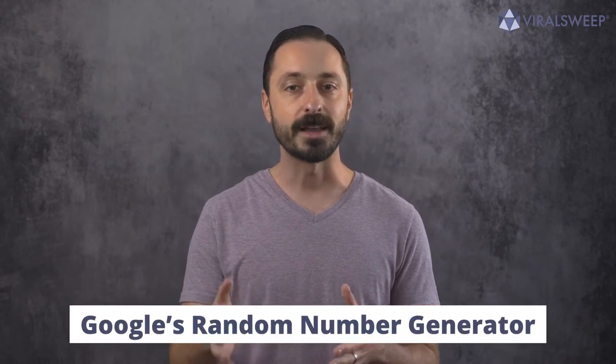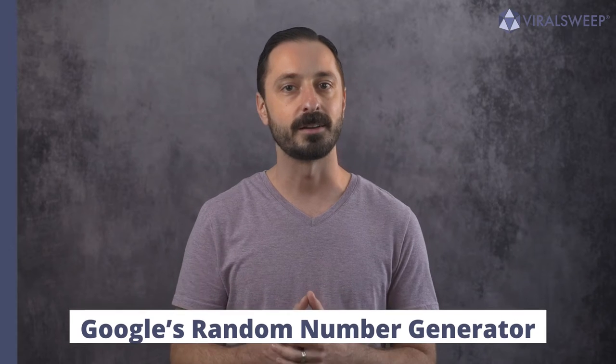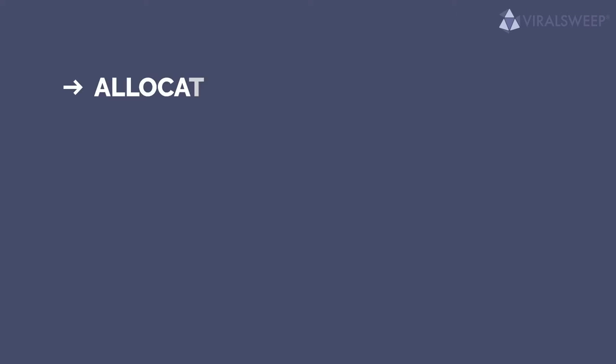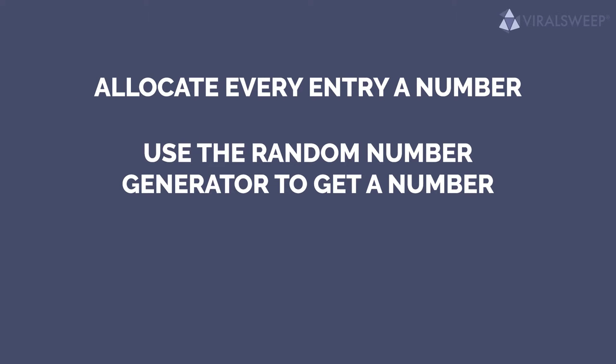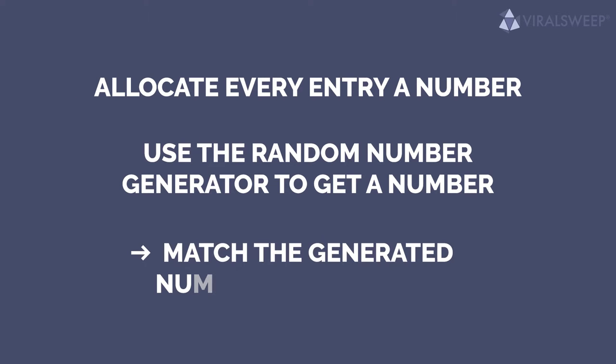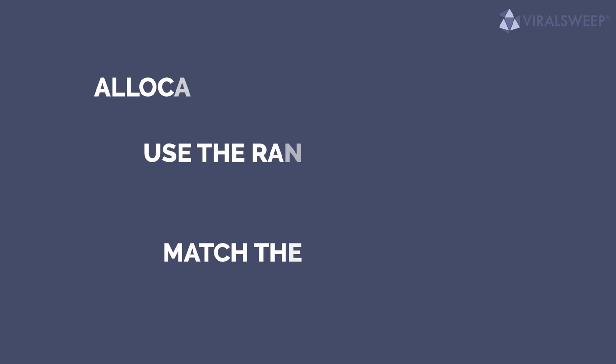Because it's not a lot of data to process, you can pick your winner using a random number generator like random.org or Google's random number generator. When using these types of free online tools, all you have to do is allocate every entry a number, use a random number generator to get a number, and then match that generated number with an entry.